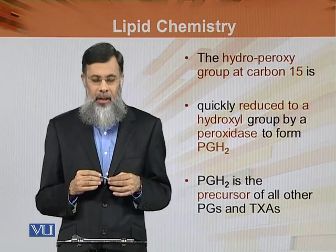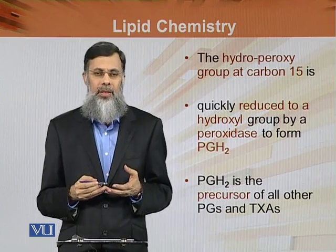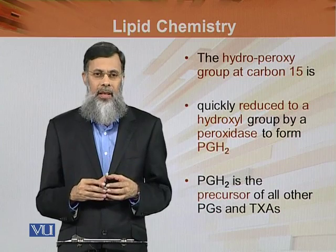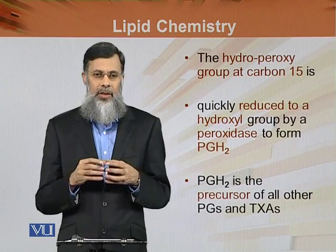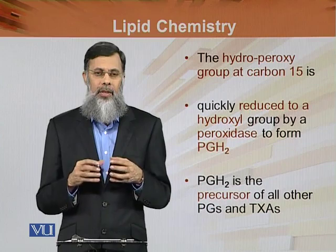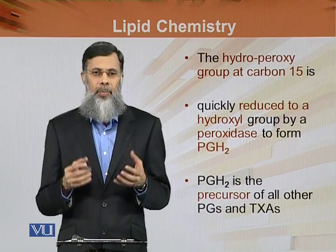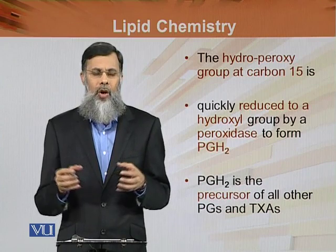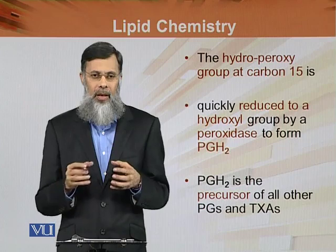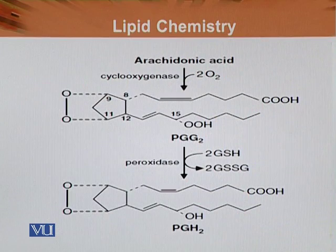Prostaglandin H2 is the precursor of all the other prostaglandins and thromboxane. The 20-carbon fatty acid enters the cyclooxygenase pathway; first prostaglandin G2 is formed, then one oxygen is removed to give prostaglandin H2. Prostaglandin H2 is the precursor responsible for making all the remaining prostaglandins and similarly thromboxane.